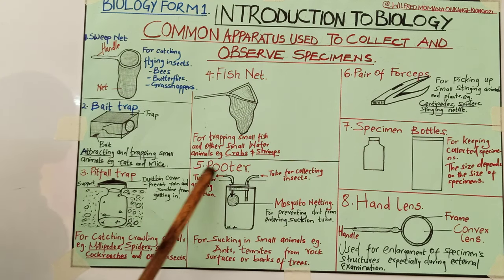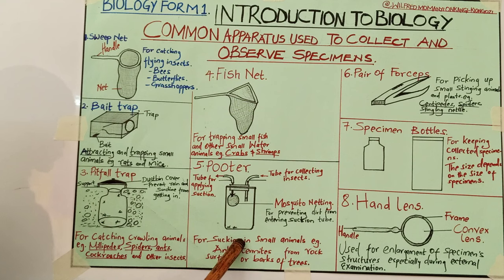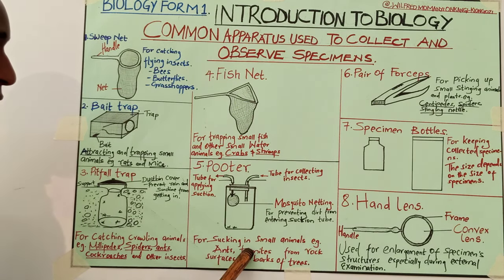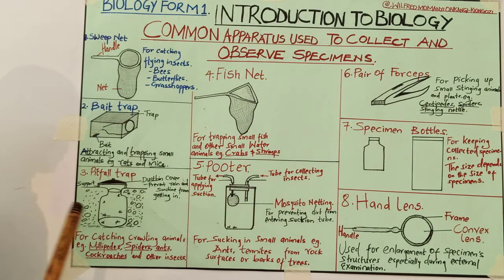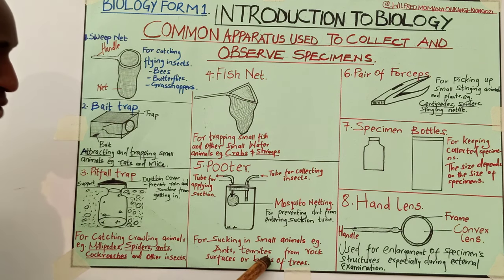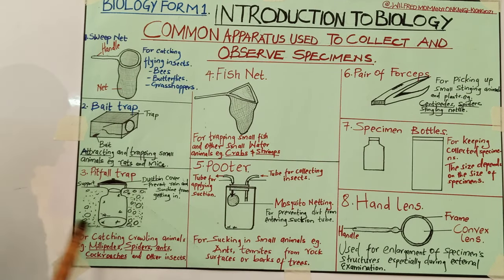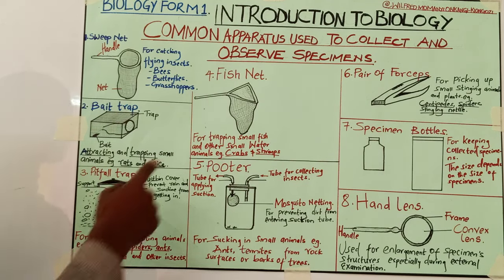Number five, we have the pooter. The pooter is a very special apparatus used for sucking small animals, such as ants and termites, from rock surfaces or barks of trees. These organisms are going to be extracted from the barks of trees or rock surfaces. Examples include ants and termites that you may easily find on rock surfaces and barks of trees.